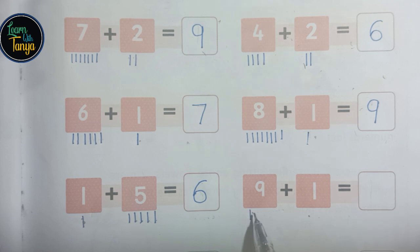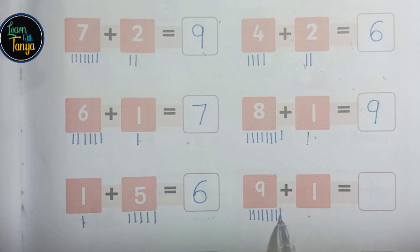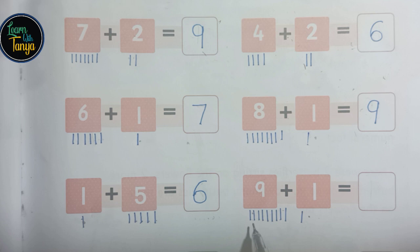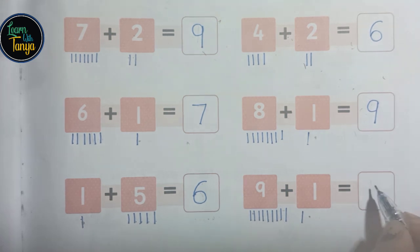1, 2, 3, 4, 5, 6, 7, 8, 9. 1 plus 1 plus 1. 1, 2, 3, 4, 5, 6, 7, 8, 9, 10. 9 plus 1, 10.